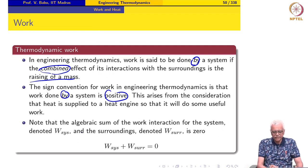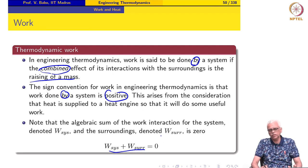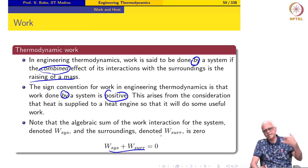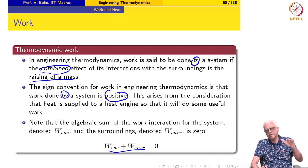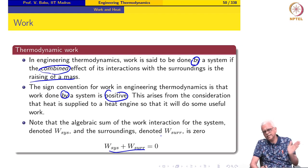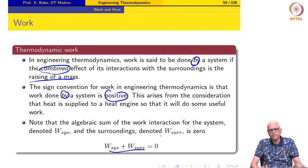We can also see that the algebraic sum of the work done by the system and the work done by the surroundings is always equal to zero. If the system is doing work — pushing the atmosphere aside, lifting a piston — the work interaction for the system is positive, while the work interactions for the piston, mass, and atmosphere are all negative, summing to zero.